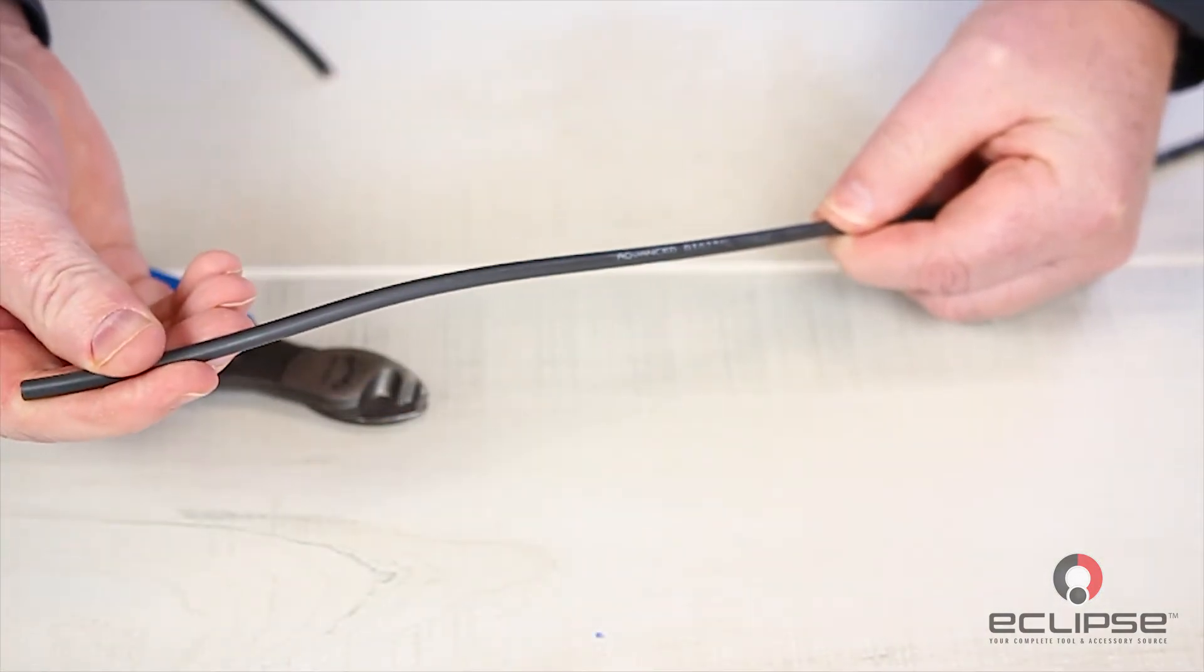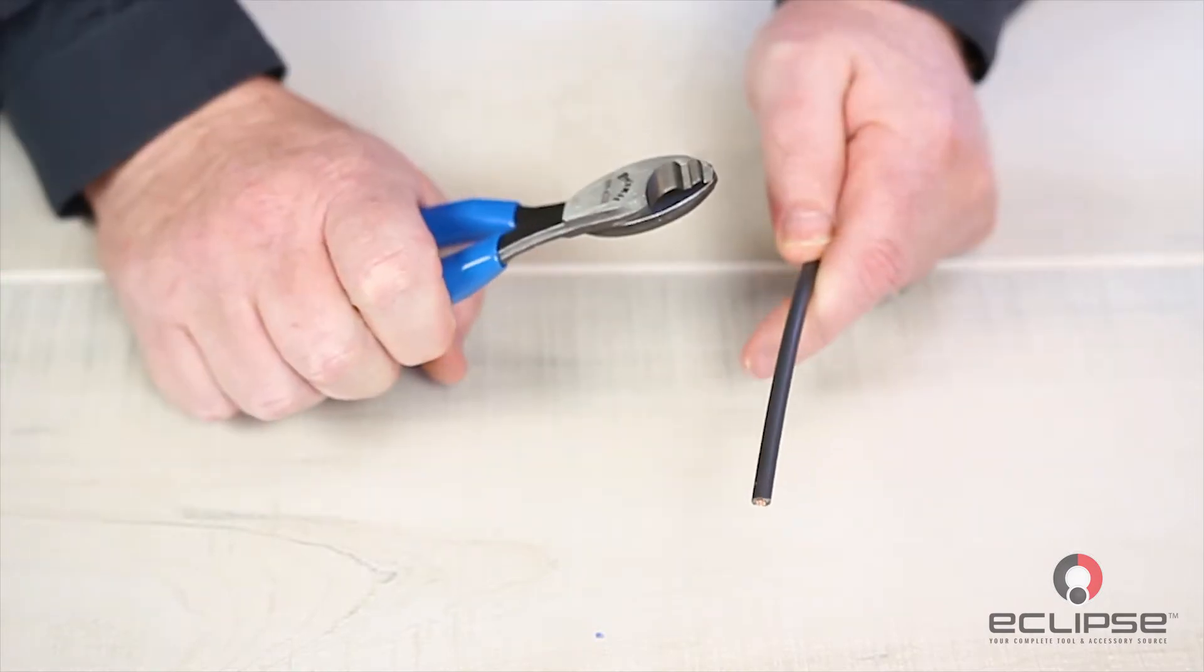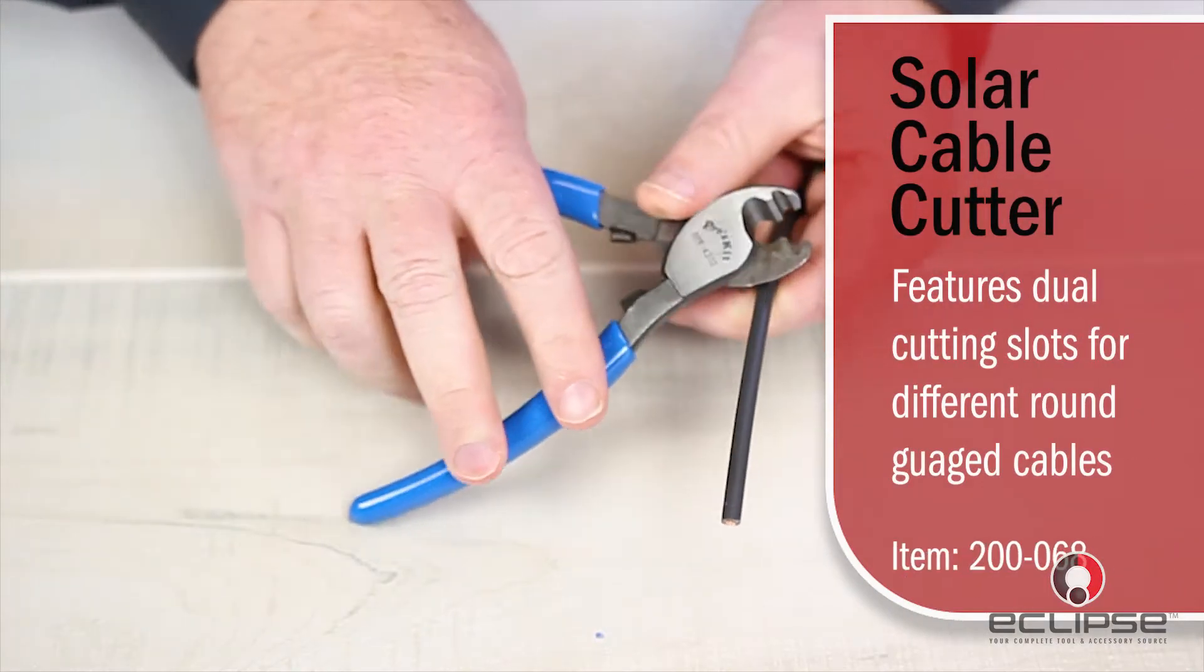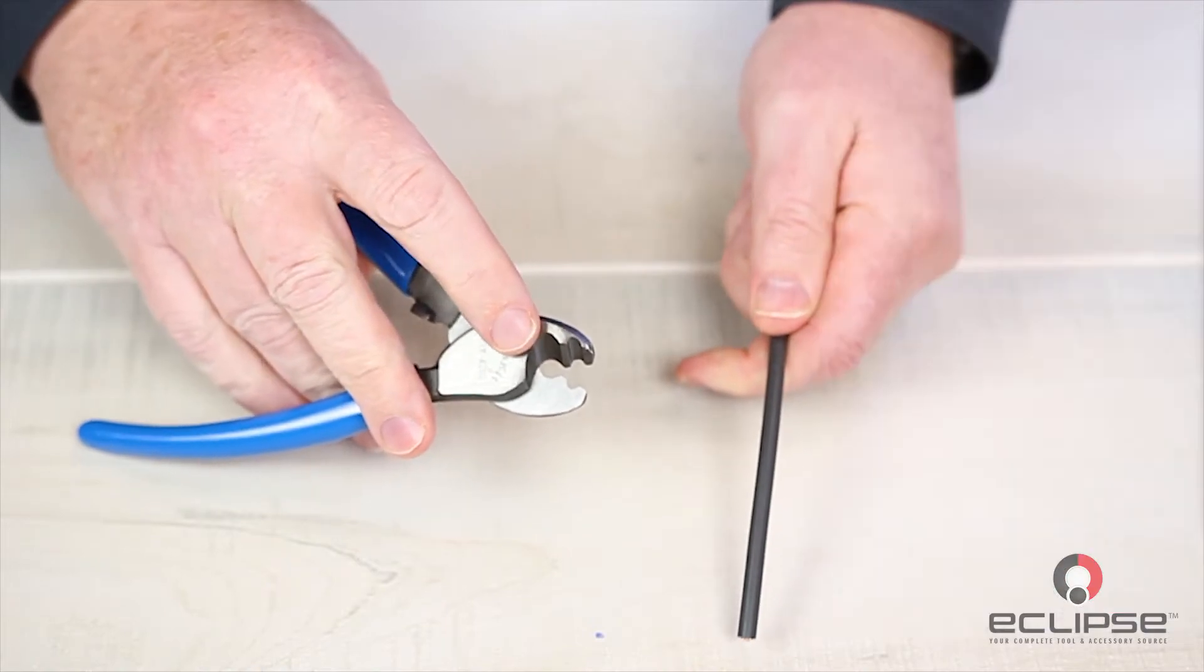Today, we're going to be using 10 gauge solar cable. Let's get started. Using the round cable cutter, cleanly cut off the amount of cable length you need for the job.